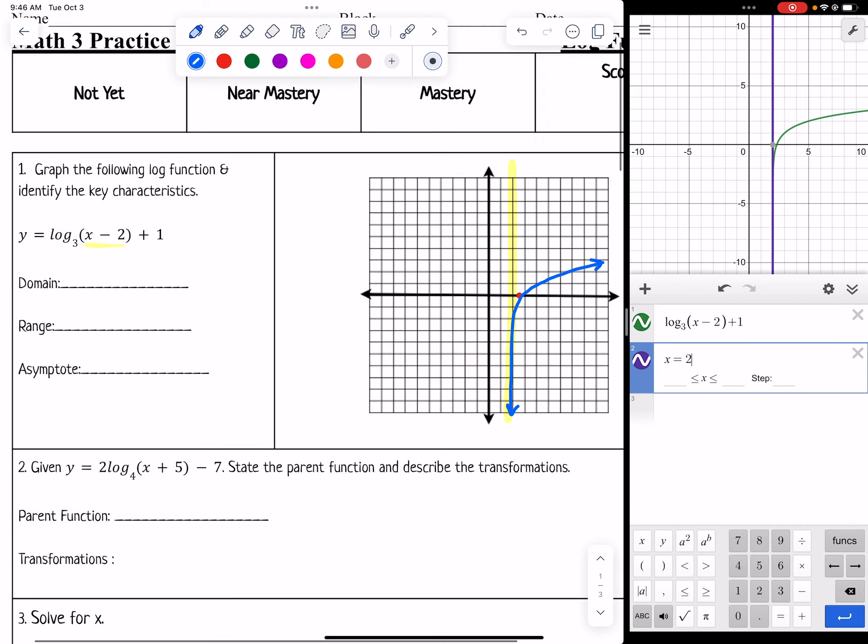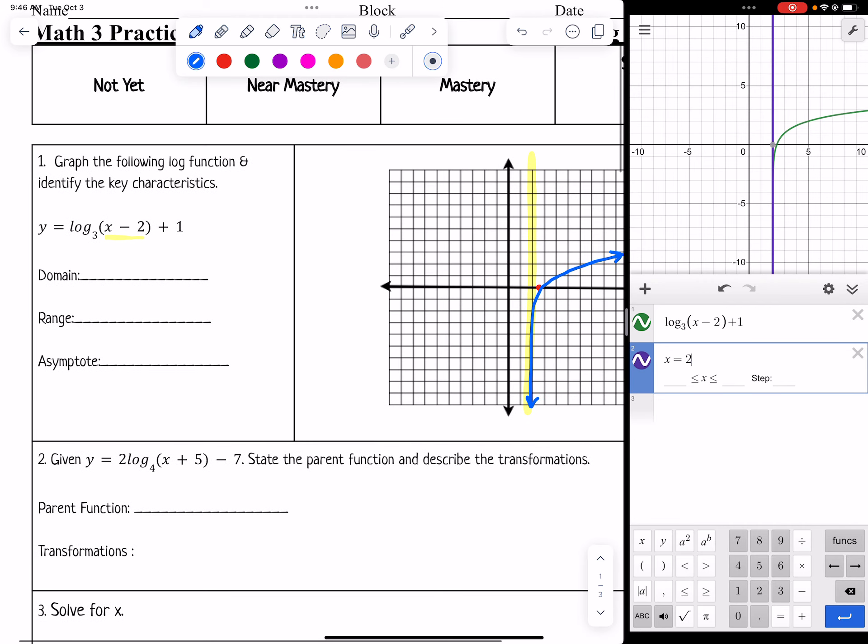The domain of this function is related to the fact that we have a vertical asymptote at x = 2. So that means the domain won't go any further left than 2 and it won't equal 2, so we need to put a parenthesis with 2. Then it goes to infinity because it goes off to the right forever. The range is going to be all real numbers because it goes down forever and up forever. The asymptote is x = 2. That's it for number 1.